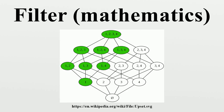Every limit of a filter base is also a cluster point of the base. A filter base B that has x as a cluster point may not converge to x, but there is a finer filter base that does. For a filter base B, the set ⋂_{b ∈ B} cl(b) is the set of all cluster points of B. Assume that X is a complete lattice. The limit inferior of B is the infimum of the set of all cluster points of B, and the limit superior of B is the supremum of the set of all cluster points of B. B is a convergent filter base if and only if its limit inferior and limit superior agree, in which case the value on which they agree is the limit of the filter base.